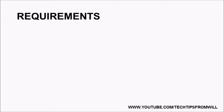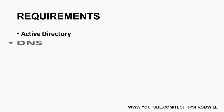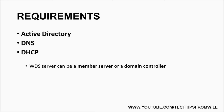The first question we need to answer is what exactly do we need in order to implement Windows Deployment Services? In order for Windows Deployment Services to work correctly, there are certain services which must be available on the network. These are Active Directory, DNS, and DHCP. It is worth noting that the Windows Deployment Services server can be either a member server or a domain controller.